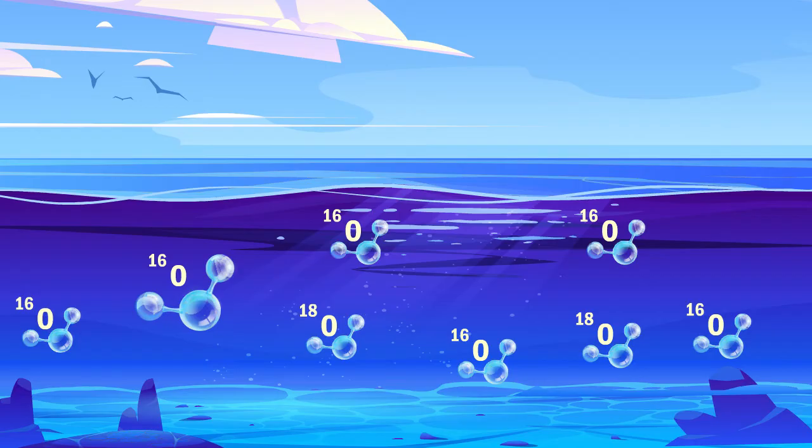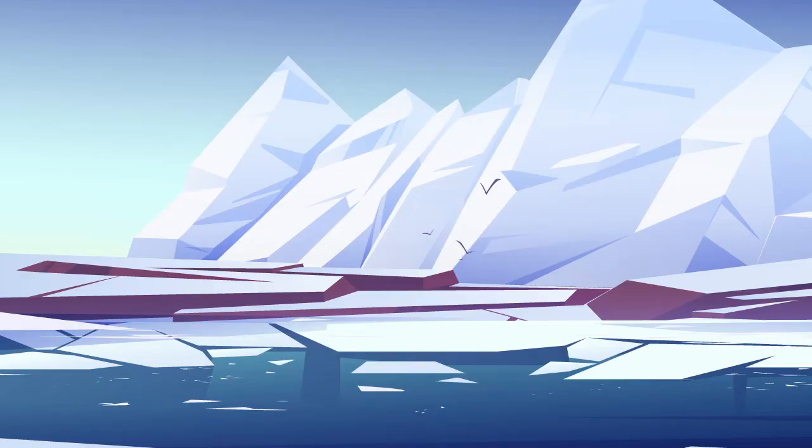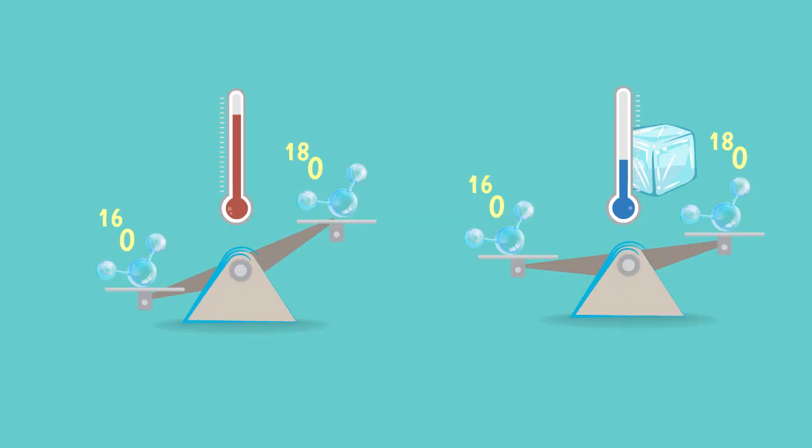But what happens if, instead of falling as rain, the water comes back as snow? In this case, it may become trapped on the continent for a long time, for example in a glacier or in an ice shield. For this reason, when global temperatures are low and there is more ice, we expect the amount of water in the oceans to decrease, and because less O16 goes back to the oceans, we expect the proportion of O18 to increase. As you can see, we can establish a direct relationship between temperature, the amount of ice on our planet, and the variations in the concentration of O18 in the ocean.